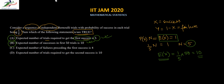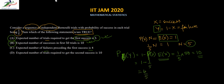Option C: expected number of failures preceding the first success is 4. The probability of failure Y is 1 − (1/5) = 4/5. Setting n × (4/5) = 4 gives n = 5, meaning in the first 5 trials the expected number of failures is 4. So option C is also correct.